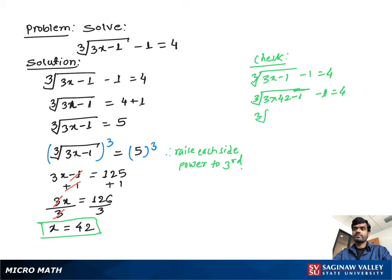3 times 42 is 126, and 126 minus 1 is 125. Moving negative 1 to the other side gives us cube root of 125 equals 5. Since 5 to the third power is 125, the cube root sign is removed and we get 5 equals 5, confirming that x equals 42 is the correct value.